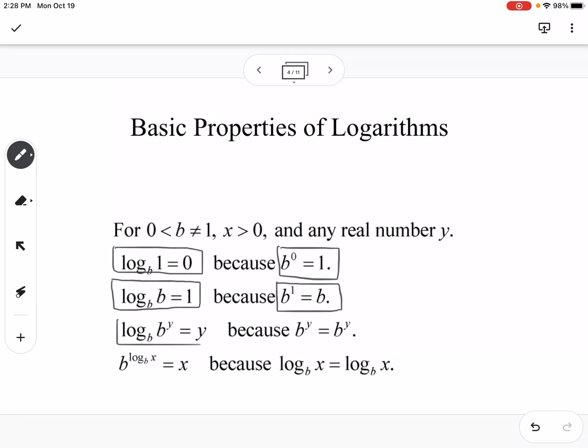If we have log base b of b to the y power, that's going to equal y because b to the y equals b to the y. And then b raised to the log base b of x is equal to x because they're inverses of each other, so they undo the operation. If we switch the form again, log base b of x equals log base b of x.